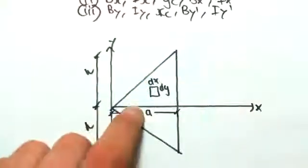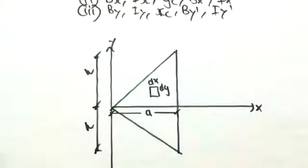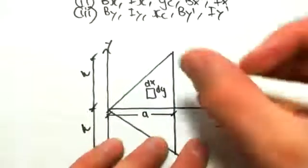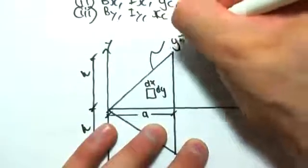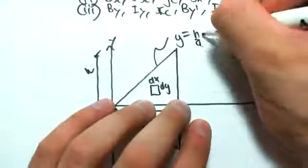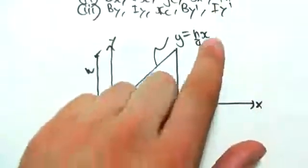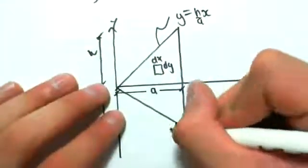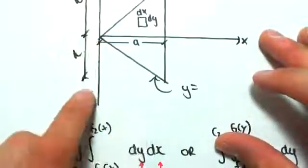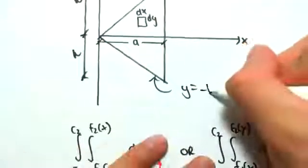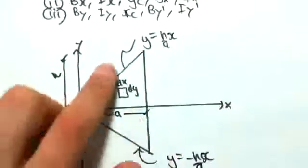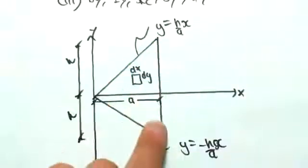So the first thing we want to do is set up the domain for this problem, and we want to see all the functions that enclose this space. So this curve will be something like y equals, so the rise and the run, h on a, x. And because there's no y-intercept, we don't have plus or minus anything there. This curve would be y equals the rise and the run, so we're going minus h down, a across, so it's going to be minus h on a, x. So those are those two curves, and this is x equals a.